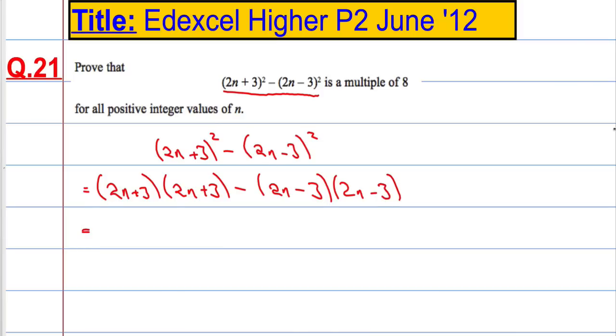When we're expanding double brackets, I take the first term and multiply by the second bracket, then take the second term times by the second bracket.